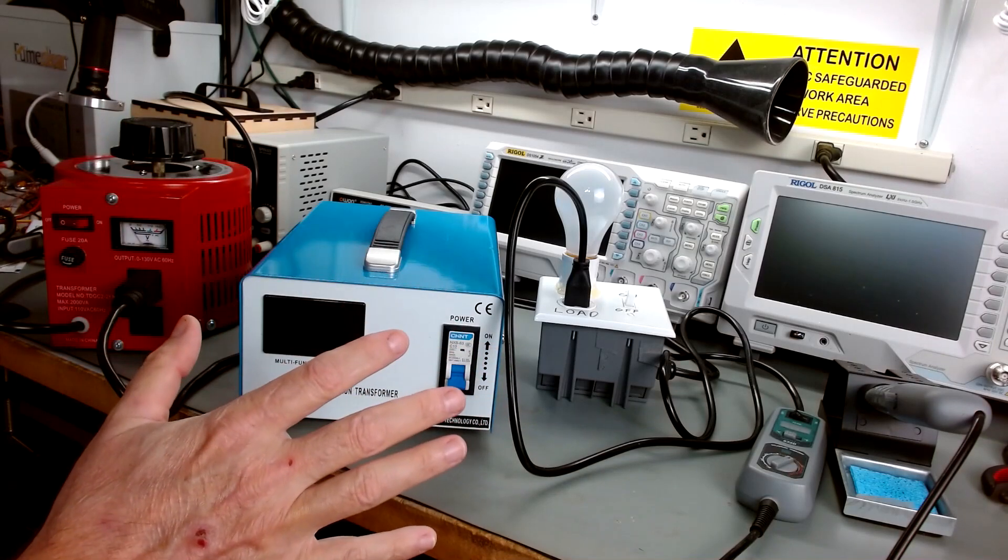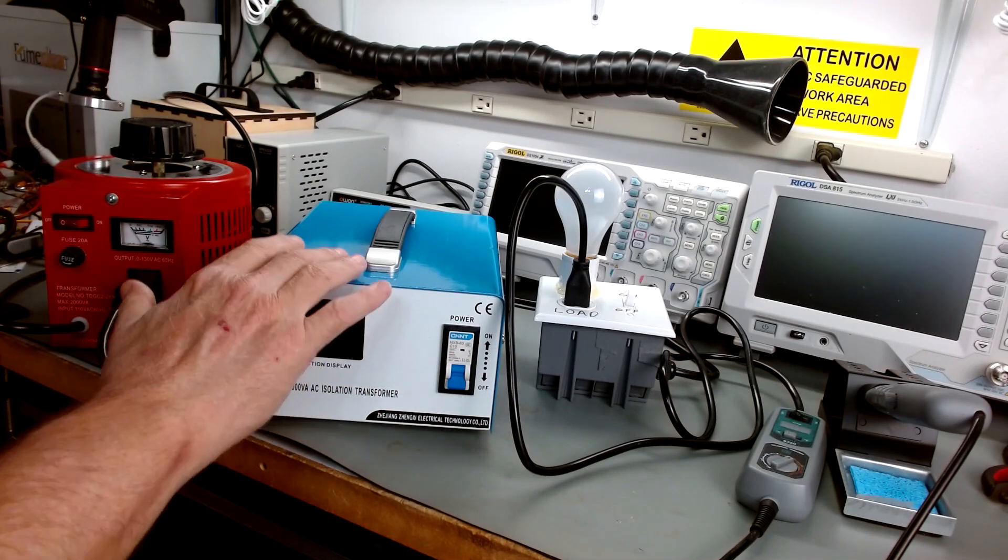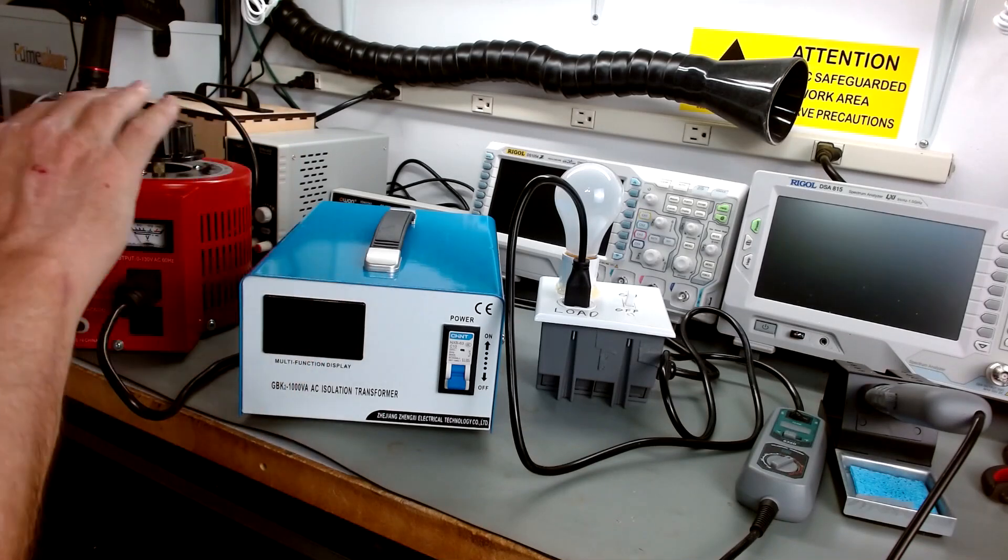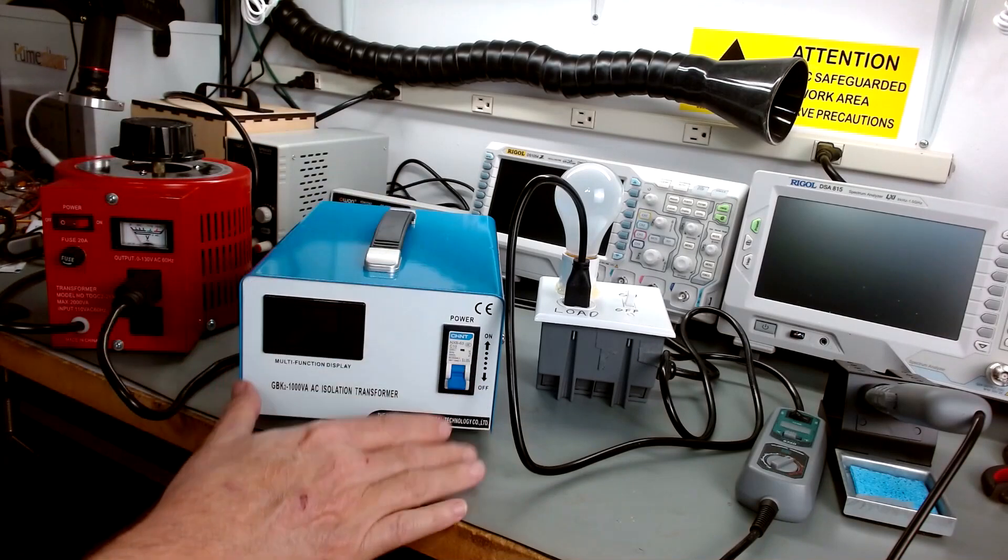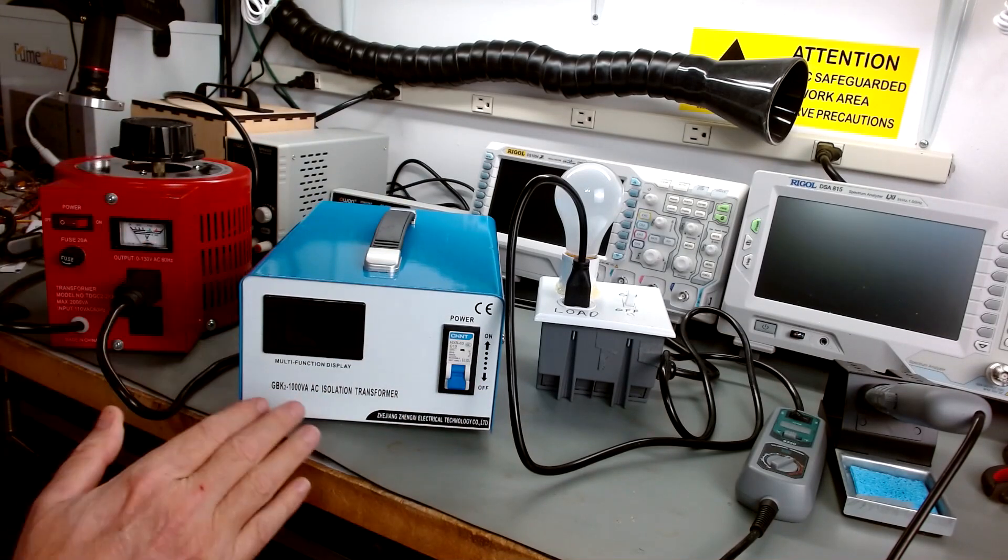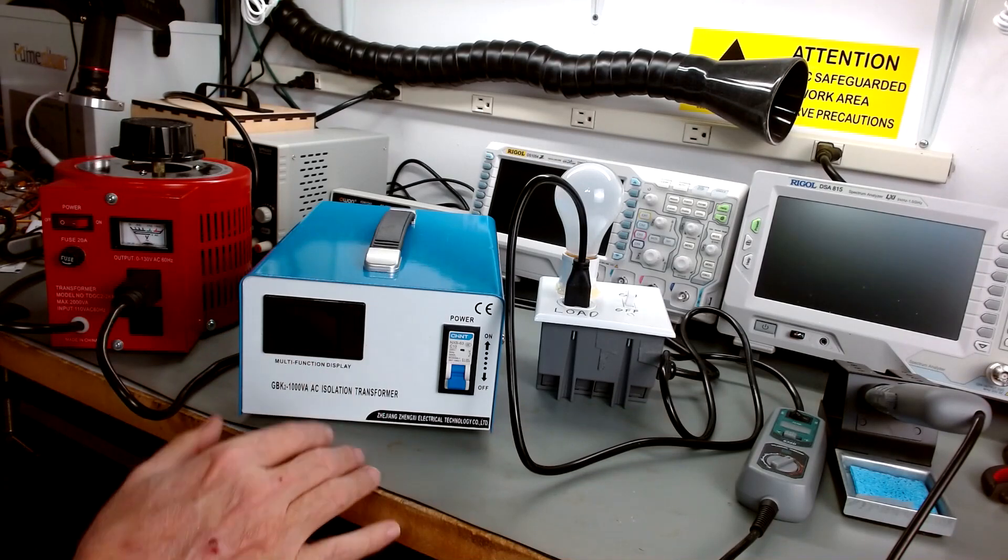So with these working together, what you've got is your variable voltage, which then gets isolated. You can do this both ways. Some people like it one way. Some people like it the other way. I prefer to have my isolation after my Variac because you'll see in a minute, it gives me the ability to monitor everything.